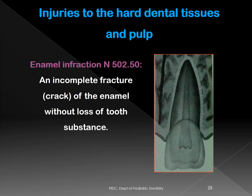The WHO classifies injuries into three categories. The first category is injuries to the hard dental tissues — enamel, dentine, cementum — and the pulp. The first injury type is enamel infraction: a crack in the tooth, not visible clinically, only seen with transillumination from the palatal side. It is an incomplete crack — not even a fracture.